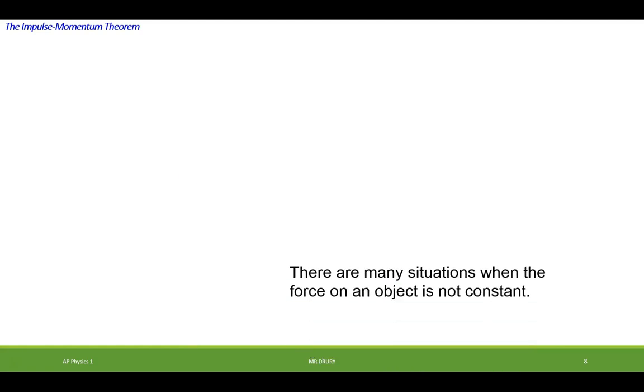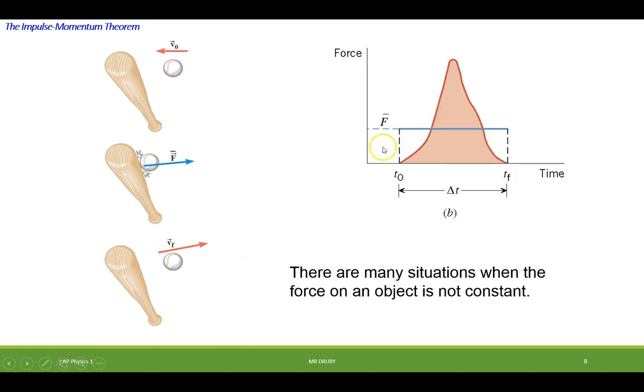So, as I just pointed out, there's many situations where the force is not constant, and I wanted to show you a quick graph of that. Imagine hitting a baseball with a bat, and the force could vary somewhere from a minimum when it first gets in contact to a maximum, where it has maximum contact to a minimum. This is actually where it's actually touching the ball.